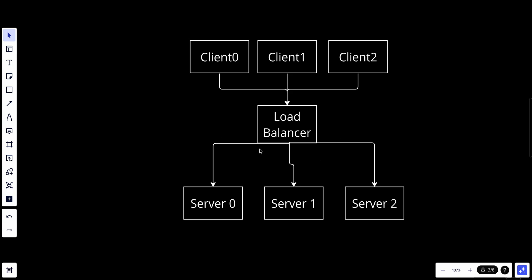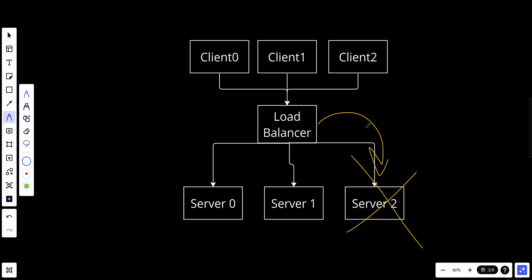Now we know how a load balancer works. First, traffic distribution: when user requests come in, the load balancer acts as a traffic cop directing requests to different servers to balance the load among them. This can be done using various algorithms such as round robin, least connection, or IP hash. The load balancer also continuously performs health checks on servers to ensure they are available. If a server fails a health check, the load balancer stops sending traffic to it until it becomes healthy again — so if server two goes down, it automatically routes requests to server one and server zero instead.